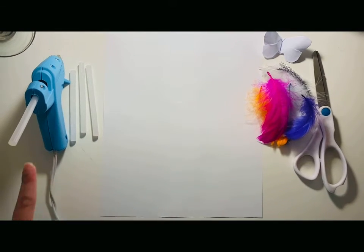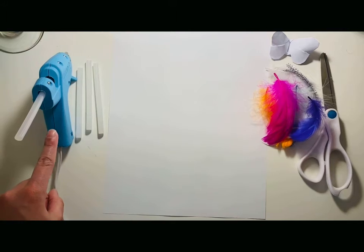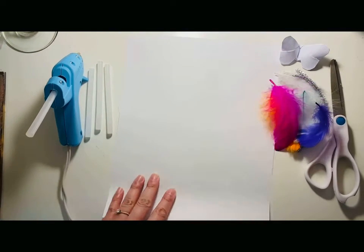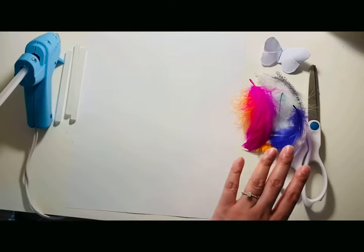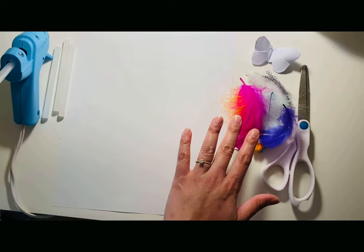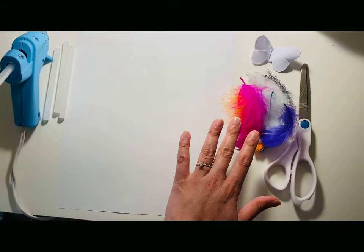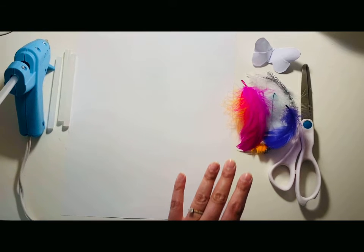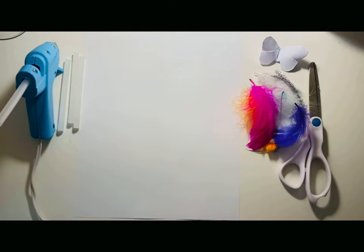What you'll need is a glue gun, some glue sticks, a sheet of paper—it can be any sheet of paper of any color that you want—a pair of scissors, and anything that you want to use to decorate the moth with. I used feathers, I wanted to give the moth that fluffy look, and then I also have some pipe cleaners for the antenna.